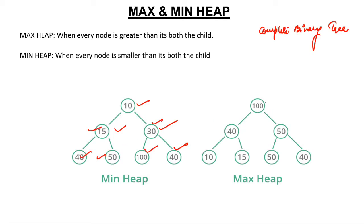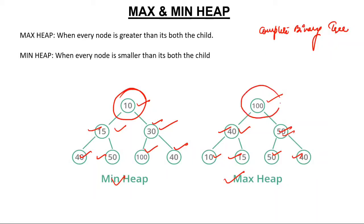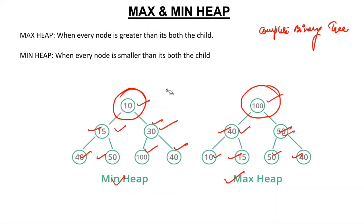Then what is max heap? It is just the opposite of min heap. If you pick any node, it should be greater than both its children. For example, if this node is 100, it should be greater than both children. The top element of min heap is the smallest among the entire tree, and the top element of max heap is the largest. We have used min and max heap for implementing priority queues.